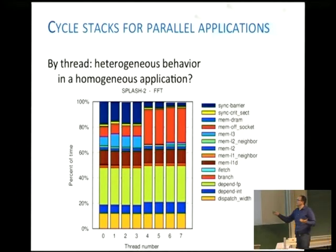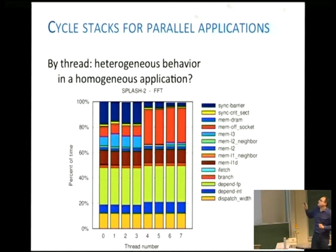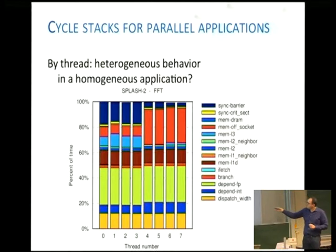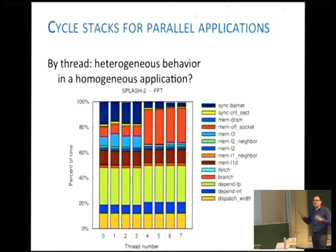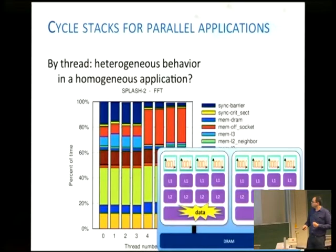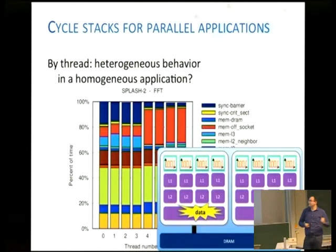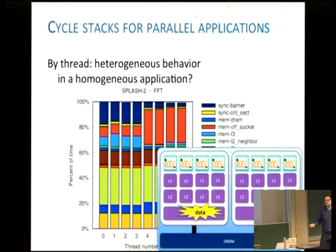Why don't we look at it over multiple threads? We'll want to focus on the red bars — the red component is off-socket memory — and the dark blue, which is waiting in synchronization at a barrier. It turns out the data is residing on the first socket. So the simulator can tell you that one socket can access the data quite easily, but because of NUMA effects, the other socket is unable to get that data as fast, and that's where the performance hit is occurring.